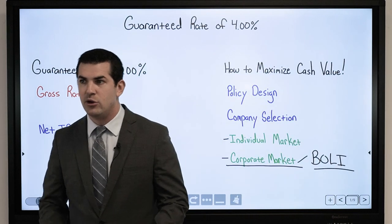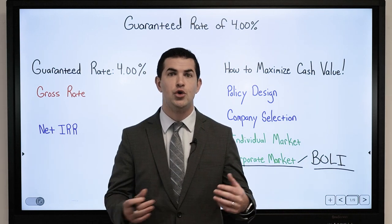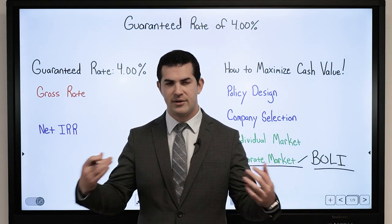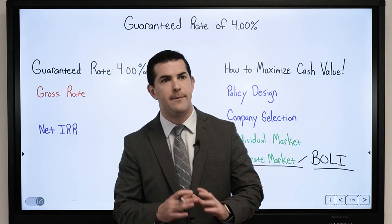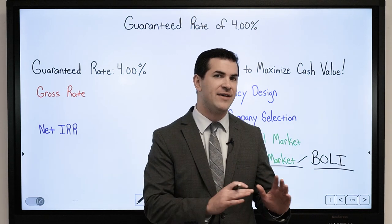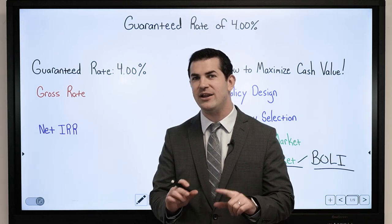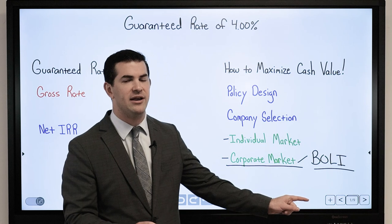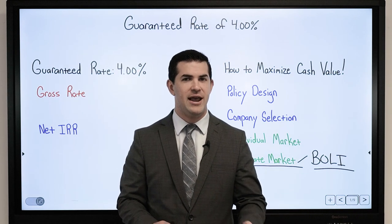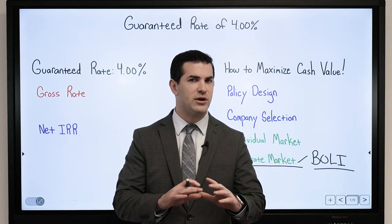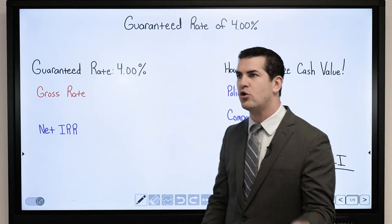There were a number of companies we looked at, and the bank actually decided to use two different insurance carriers — just how the BOLI structure required based on the size of the bank. My point here is that a lot of emphasis was put on the guarantees, and you will find that the guaranteed rates with a BOLI product actually vary from company to company — some are stronger than others.